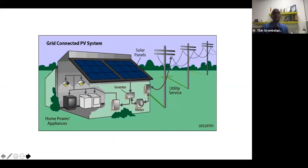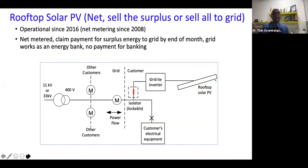And of course probably more than 25,000 rooftop systems, maybe even 30,000, connected through three different mechanisms: net metering, net plus, and net accounting. I will not go into a lot of details, just to show you a picture of what happens — power flowing to and fro between the system and the customer.